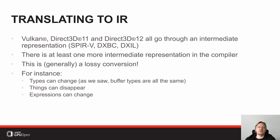That makes intermediate representations very interesting for graphics APIs, because we don't want different drivers to produce different results. As such, all of the major graphics APIs these days mandate the use of intermediate representations. SPIR-V is the one for Vulkan, DX Bytecode is the one for D3D11, and for Direct3D 12 we have to use DXIL.